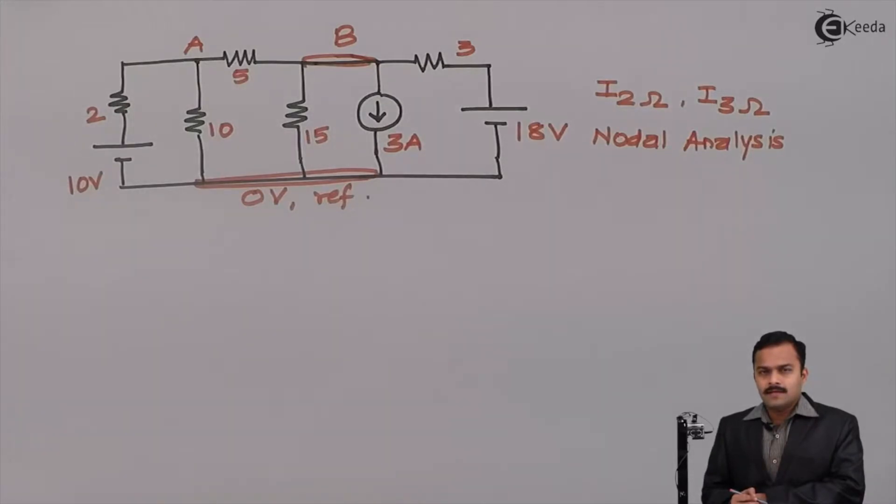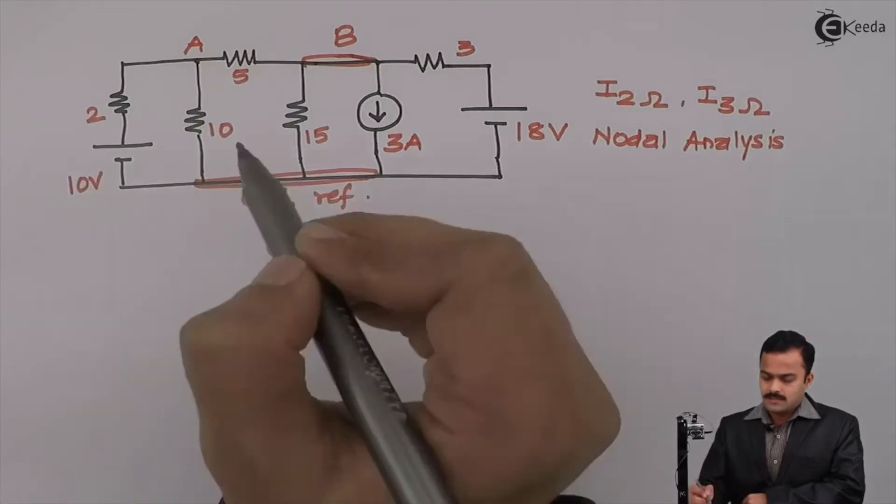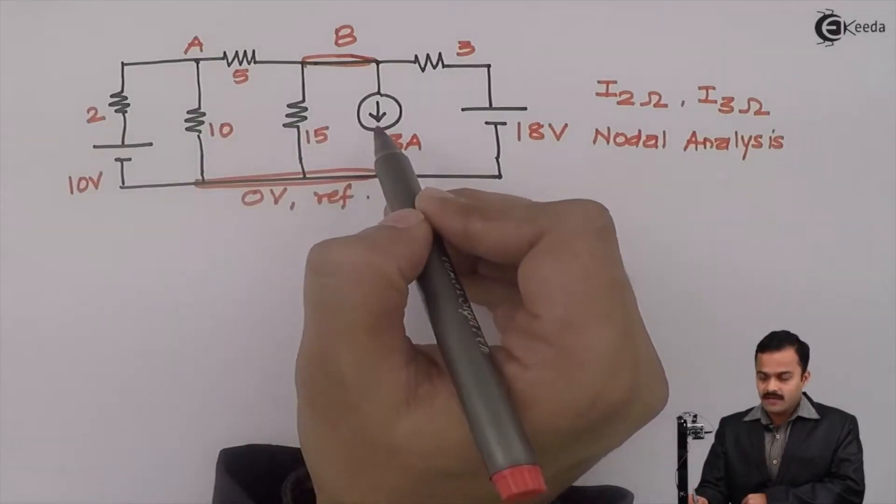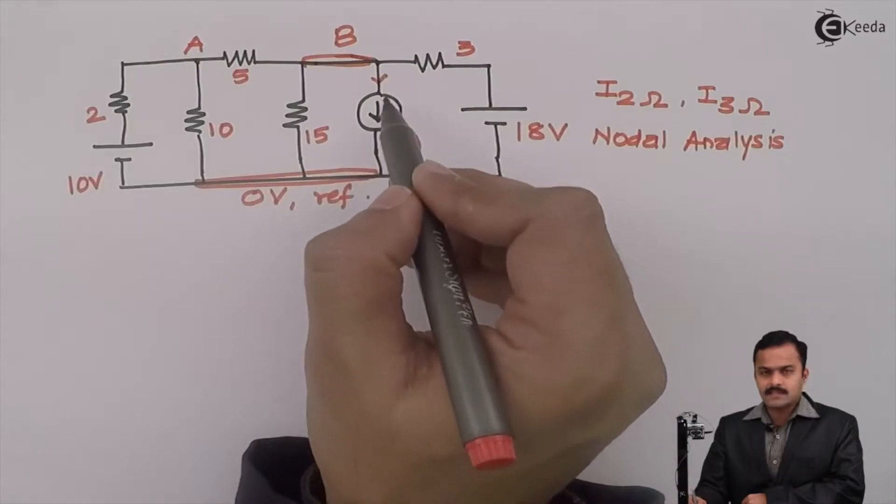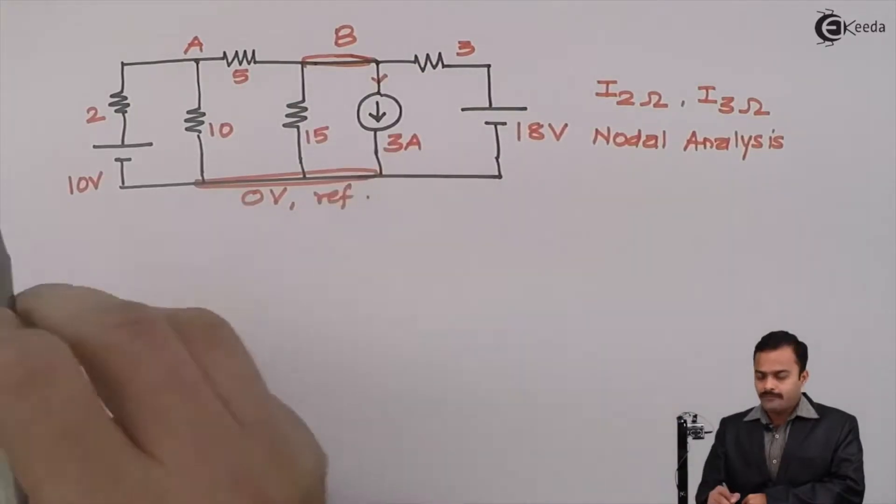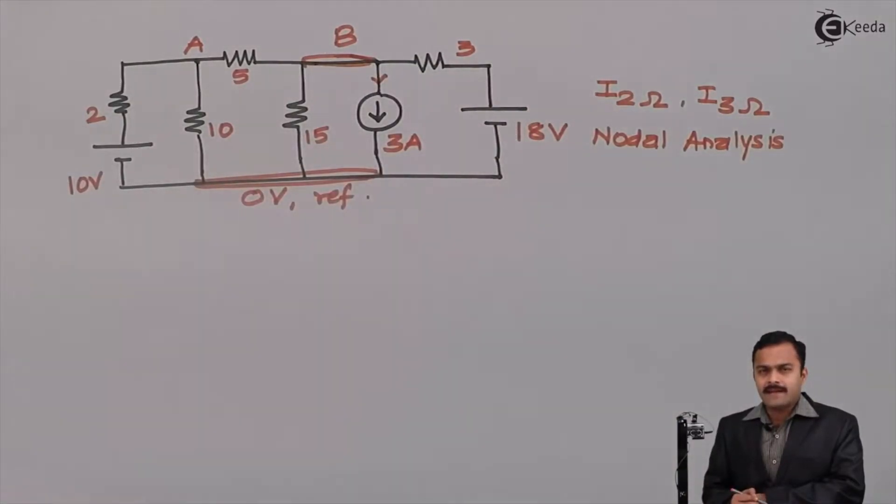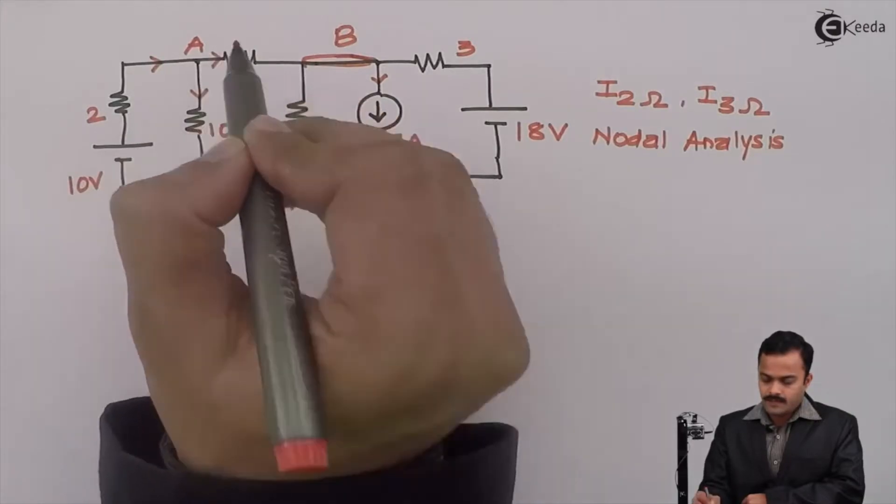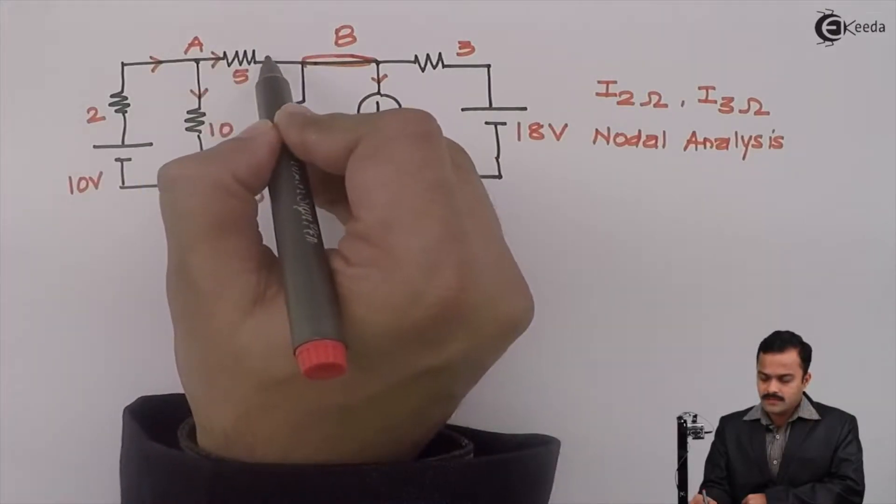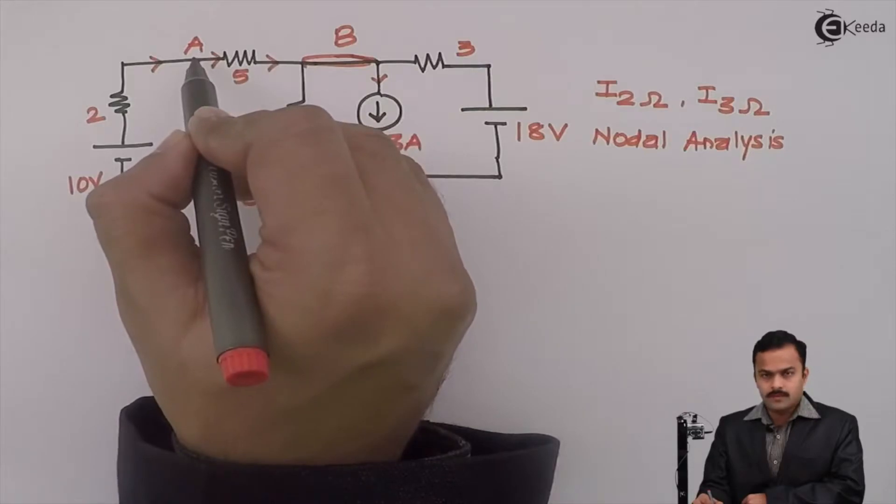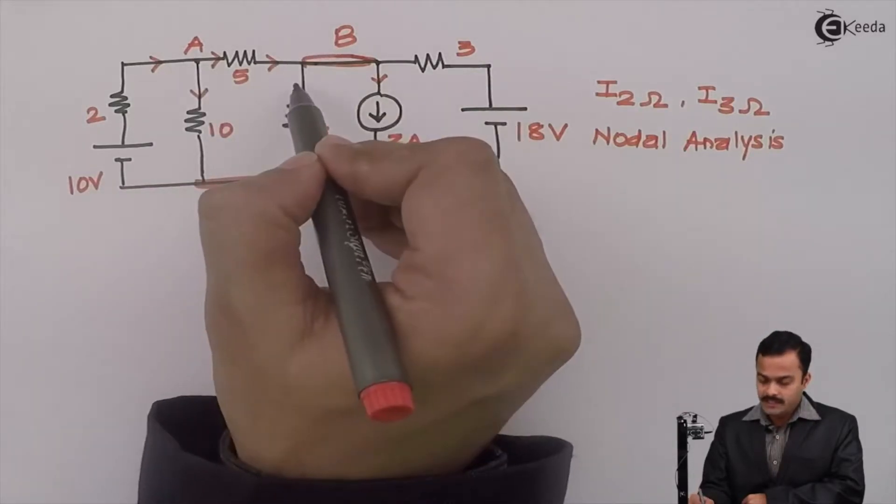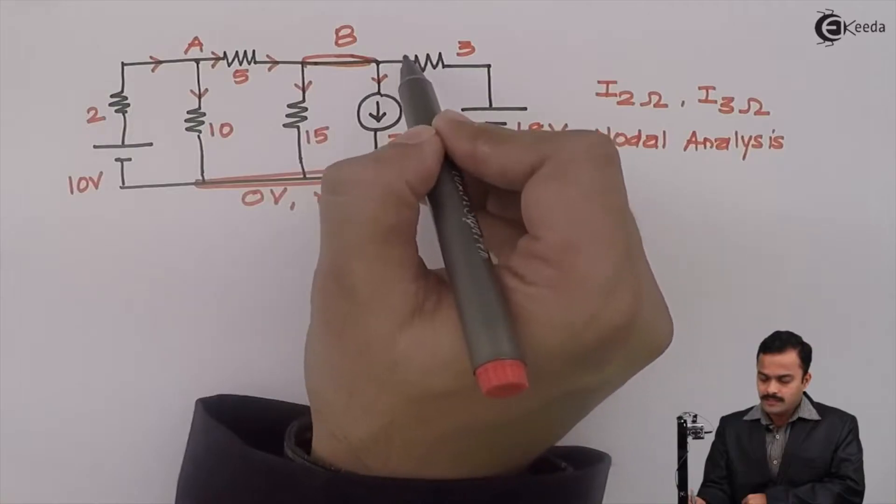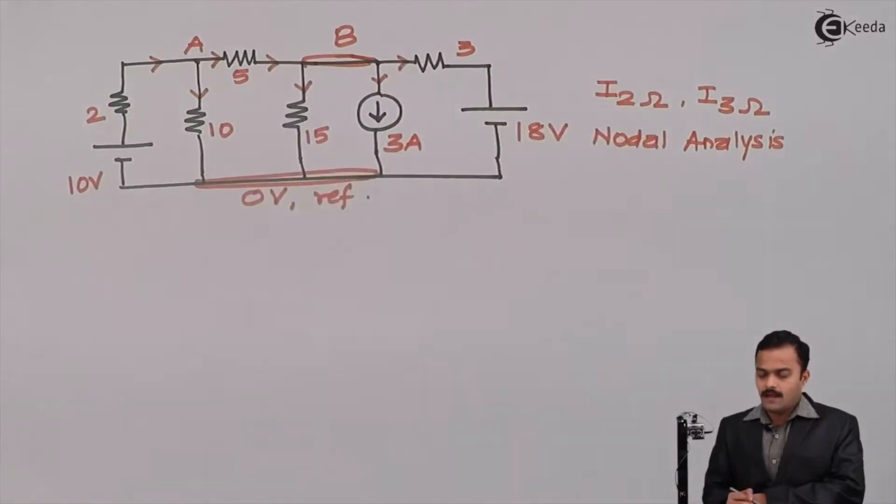Second step, let's mark current directions for all the branches. Current source is given, so I will keep the direction same as the current source for this branch. For remaining branches, I can consider random direction of current. So let's take this is incoming, outgoing, outgoing. Obviously this will remain outgoing for node A but it will be incoming for B. This is outgoing and let's take this also outgoing.